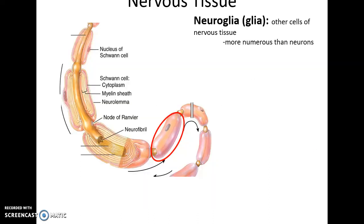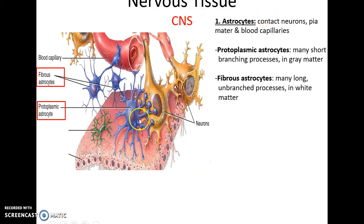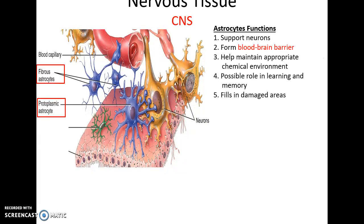Neuroglia are other cells found in nervous tissue — there are actually more of these than neurons. Astrocytes are specialized cells that support neurons, provide a proper environment, and make contact with blood capillaries. There are protoplasmic astrocytes, which are short and found in gray matter, and fibrous astrocytes with longer processes found in white matter. Astrocyte functions include structurally supporting neurons, forming the blood-brain barrier, maintaining the appropriate chemical environment, possibly playing a role in learning and memory, and filling in damaged areas of the CNS.